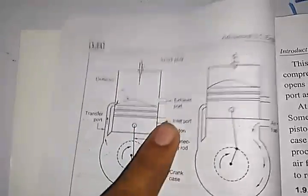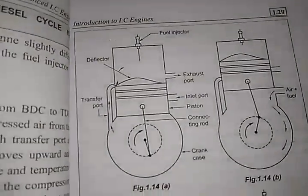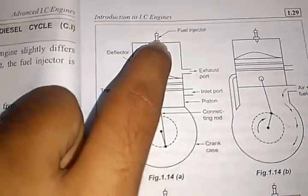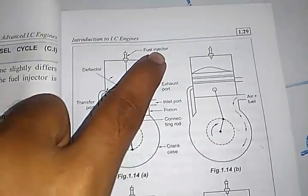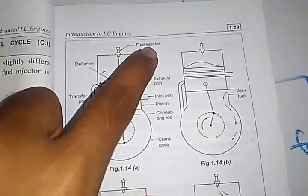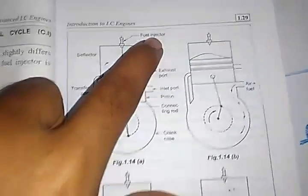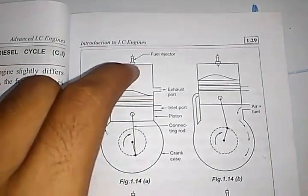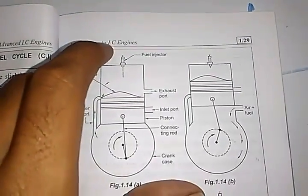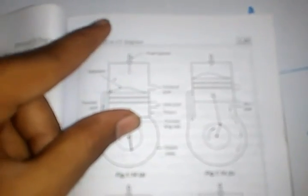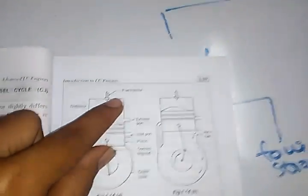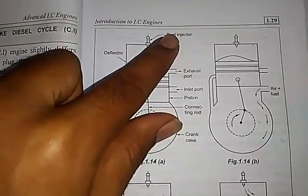This is the two-stroke petrol engine, and next is the two-stroke diesel engine. In the two-stroke diesel engine, we can find a component known as the fuel injector, whereas in the petrol engine there is no such component. Both two-stroke engines are similar in design, with slight variation in cylinder size and the presence of a fuel injector in the diesel engine and a spark plug in the petrol engine.